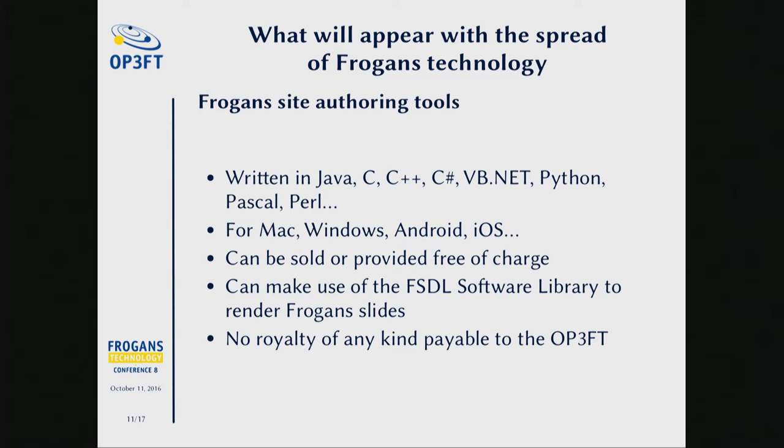Another important point: the creation of tools that will facilitate the creation of Forgance sites. The OP3FT publishes the FSDL library, which constitutes the rendering engine of the Forgance player and is an interesting element for people who want to publish authoring tools. We explain in detail the multiple languages that interest tool developers. This platform is assured by the fact that our development is written in C — it's these developers that we address when we publish these C software libraries.